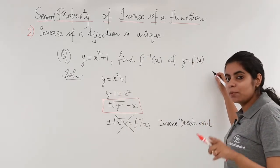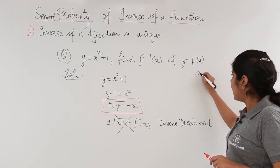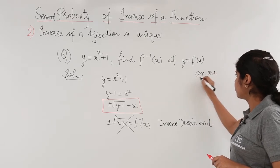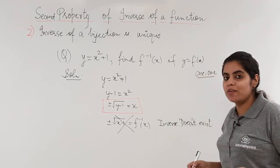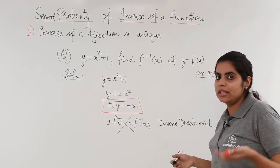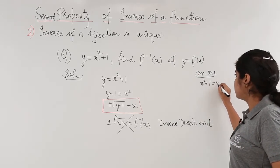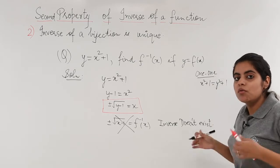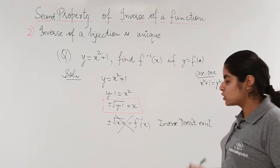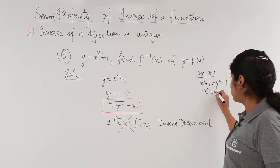I would be checking x square plus 1 for one-one. According to me, it should have been fx equal to fy, then x equal to y. So it should be x square plus 1 equal to y square plus 1, 1 and 1 get cancelled. So x square should be equal to y square.